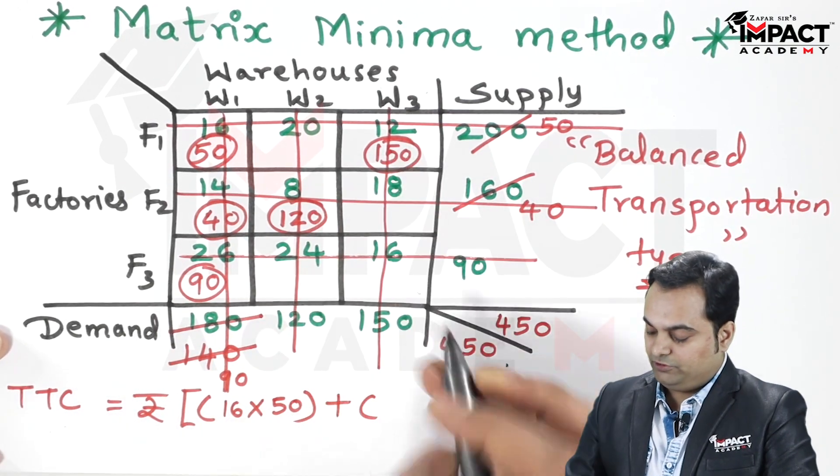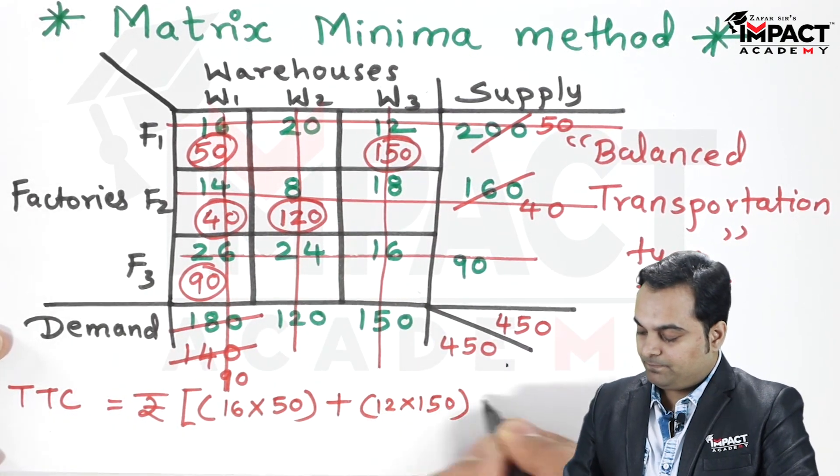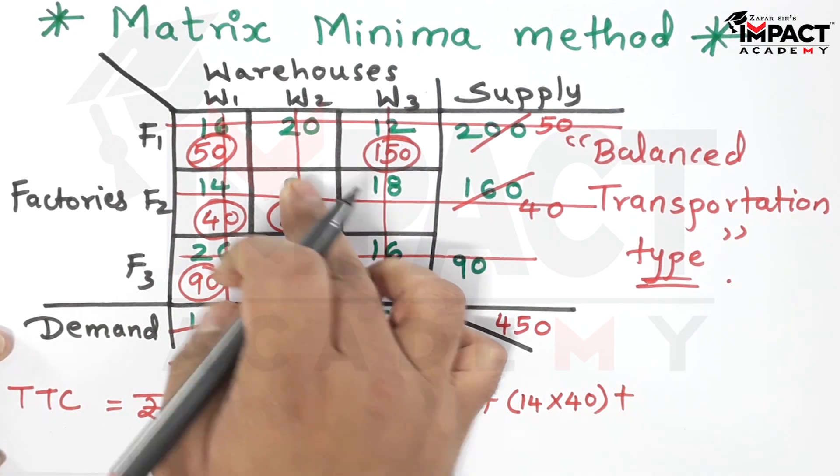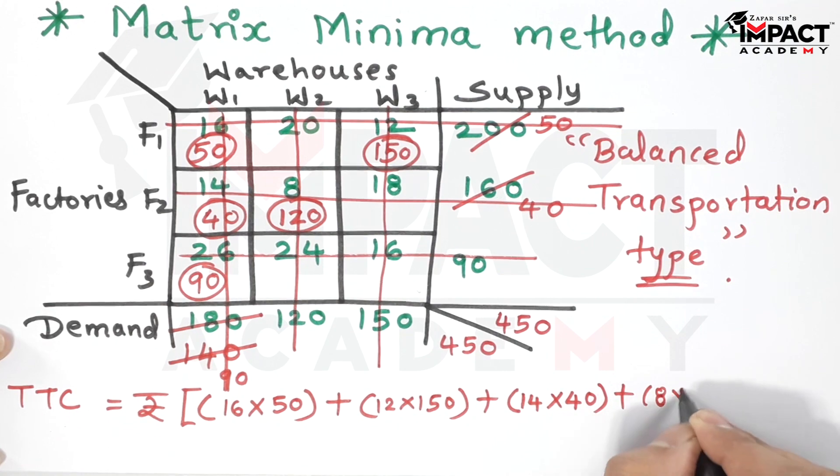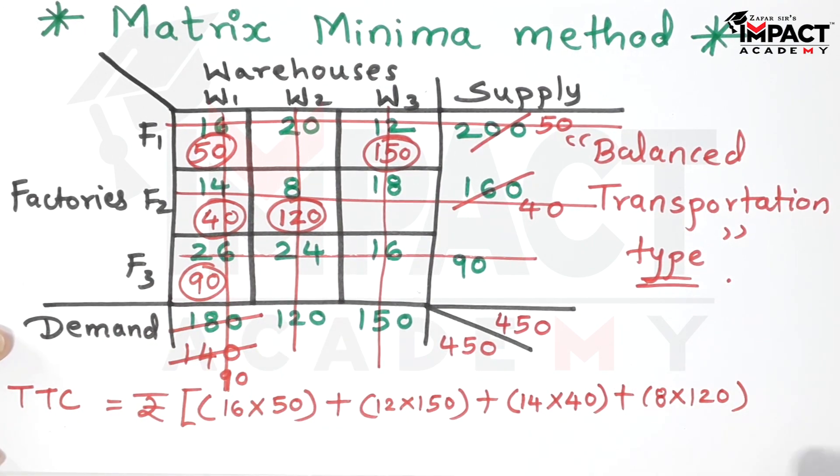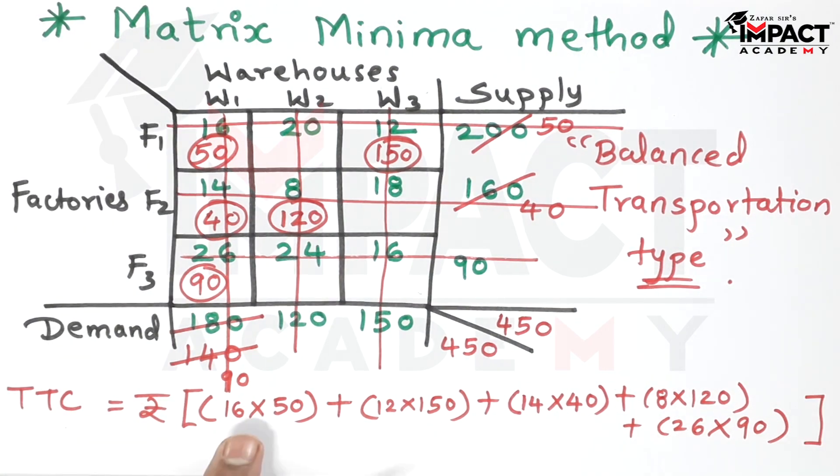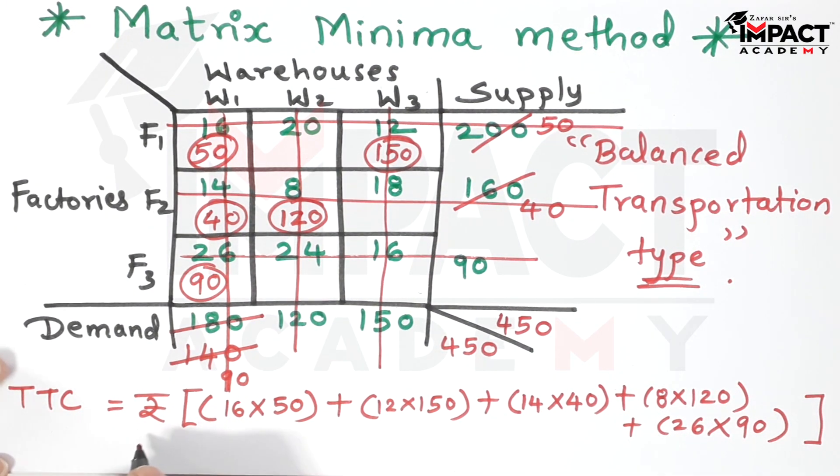So 16 into 50, then next is 12 into 150, 14 into 40, 8 into 120, then 26 into 90.